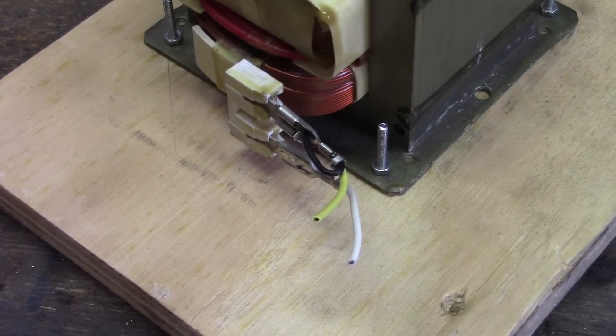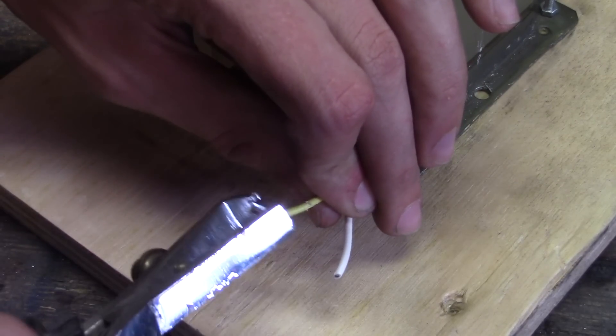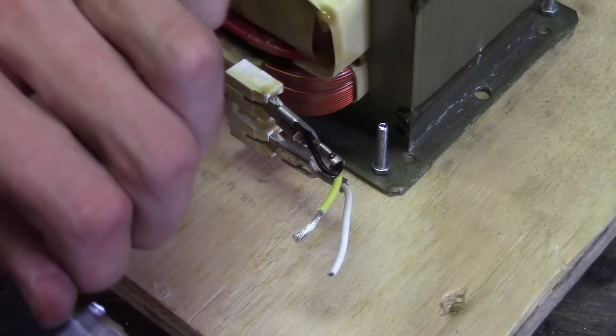Now that the transformer is attached to a piece of wood we can start wiring it up. These are the input wires, the wires that we are going to apply 240 volts to. First strip off the ends and then connect them to a power plug.